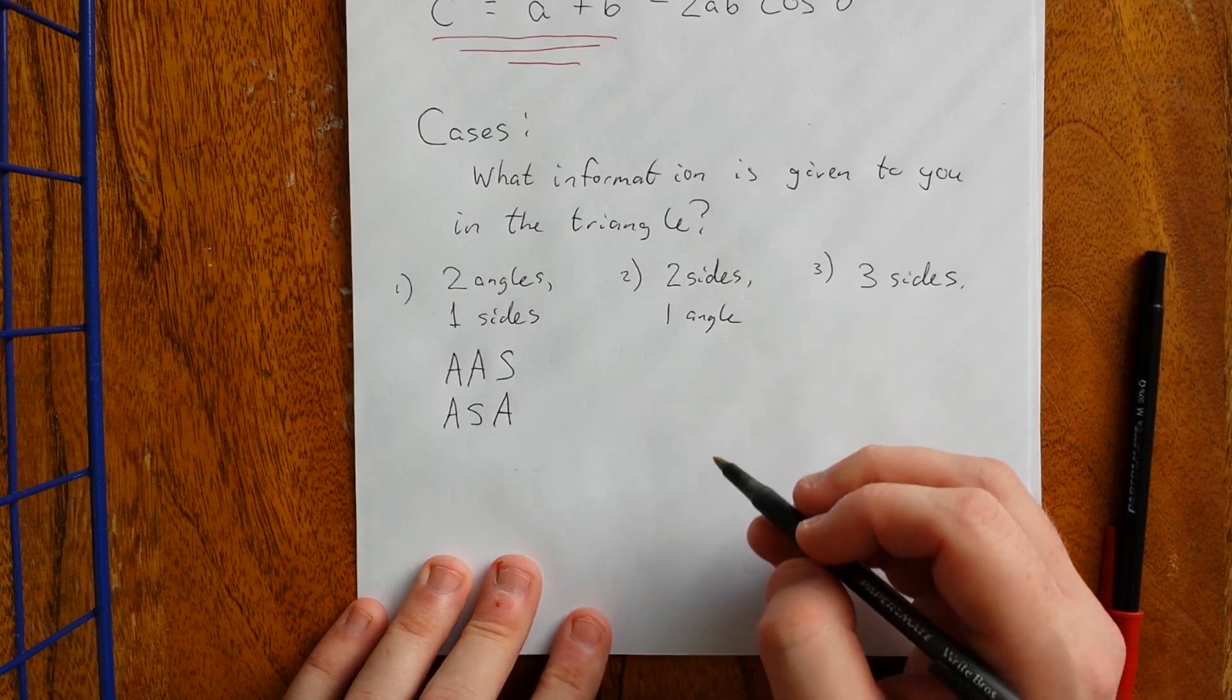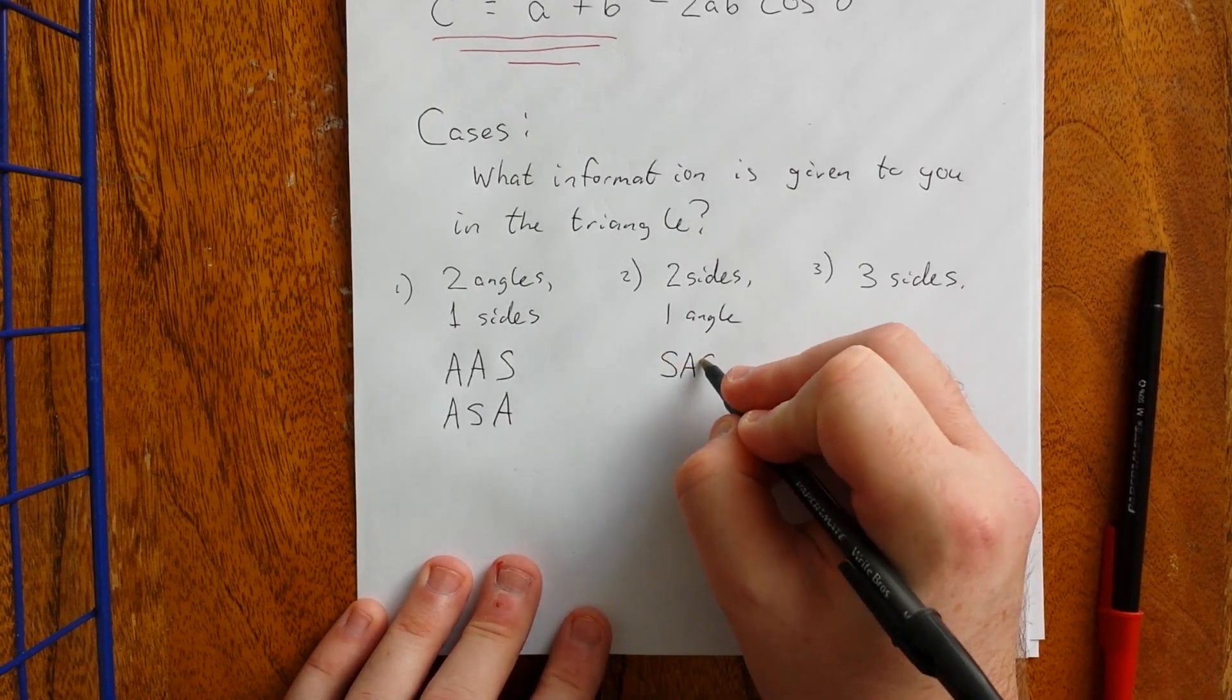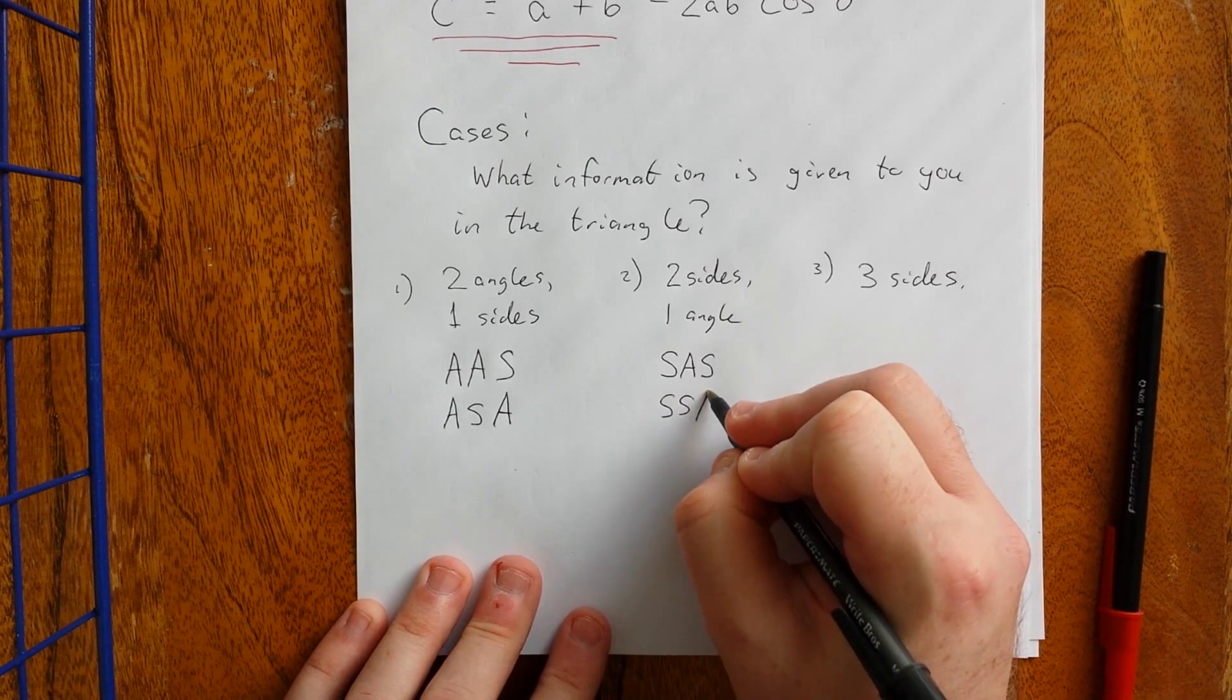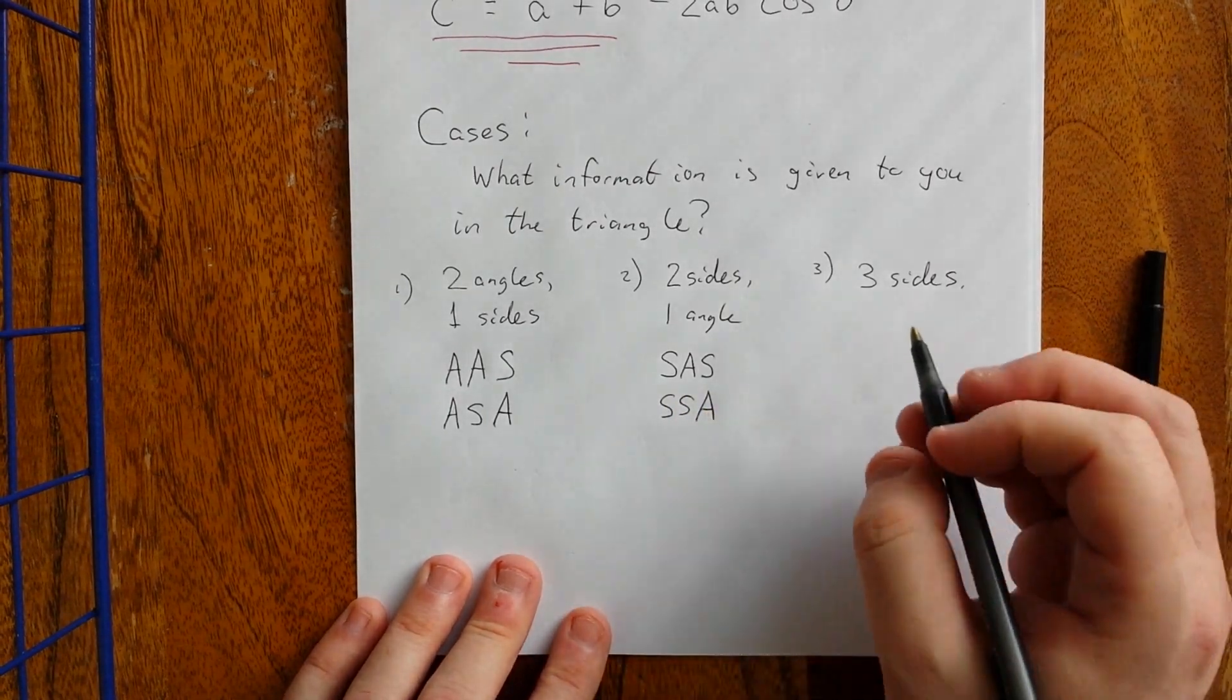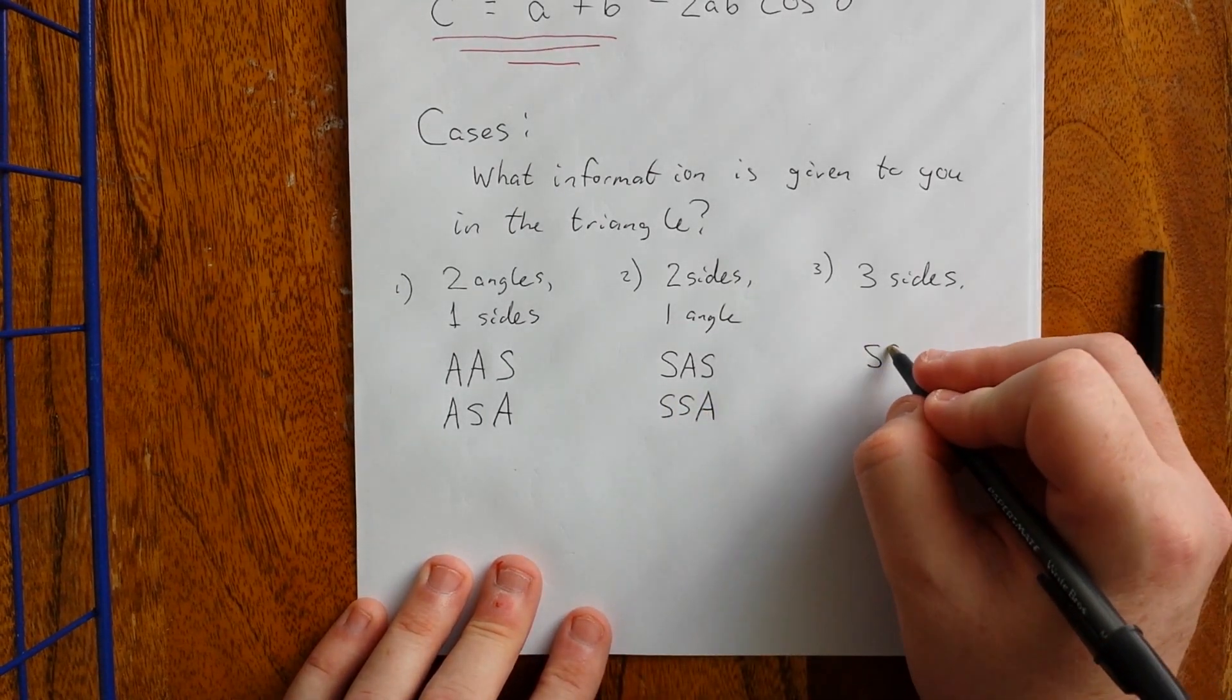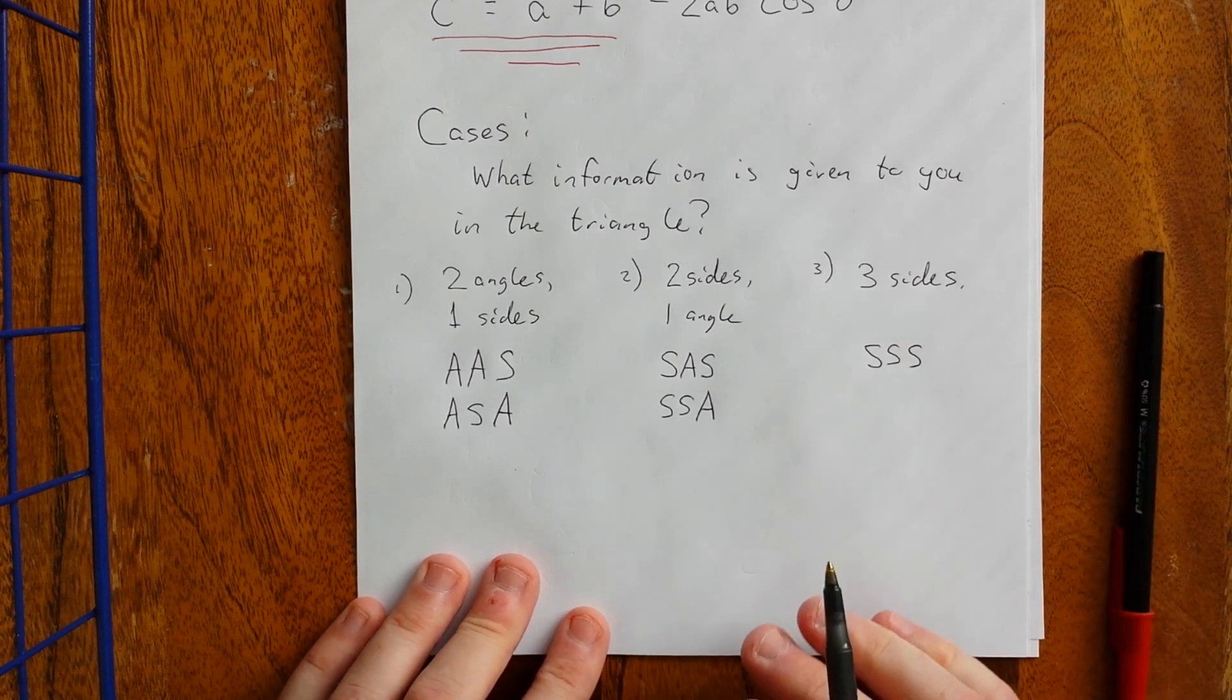If I give you two sides and one angle, you could have side-angle-side, or you could have side-side-angle. If we are talking about three sides, then there's only one case there, and that's referred to as side-side-side.